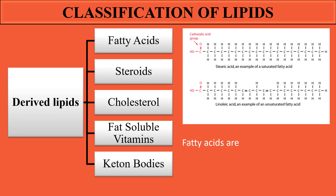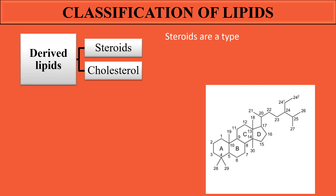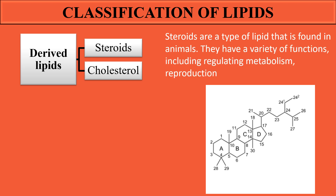One of the most common derivatives of lipids are fatty acids. Fatty acids are the main component of the body's energy storage form, and they are also the main components of the cell membrane, making up the tails of phospholipids, which in turn make up the cell membrane.